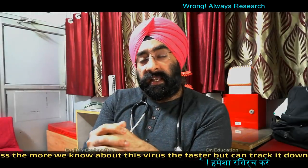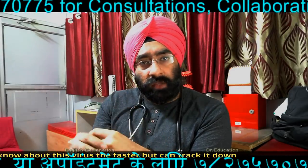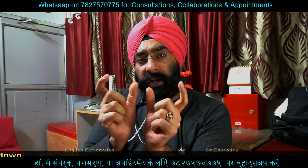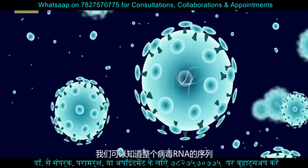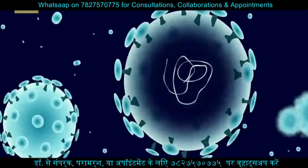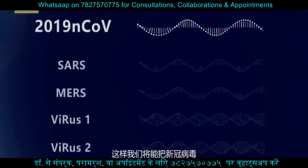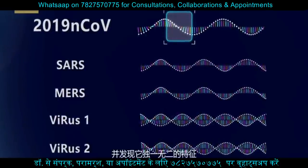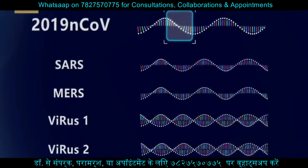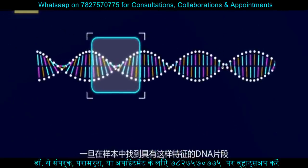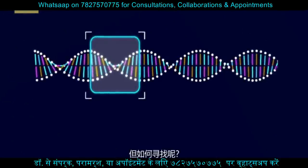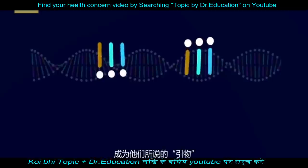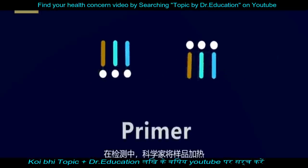Lekin aise har jagah nahin hota. Wahan kya hota hai: kai log us RNA ka ek specific key point pakad lete hain — ek aisa point jo isko ek pehchaan deta hai ki yeh hi hai. Is entire RNA ka ek signature part, ek distinctive signature part liya jaata hai aur us signature part ko hum primer bana dete hain. Os primer ko is test mein use kiya jaata hai.